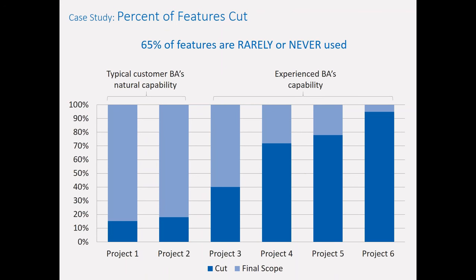This chart shows what happens when you focus on cutting unnecessary scope. We found an experienced BA can cut 80% of features — sometimes more — when that is their focus. The typical person without this focus might cut 15% to 20% of scope naturally. We're trying to push further by actively cutting scope based on business value. This data comes from six different projects we analyzed, with the first two being post-project retrospective analyses.